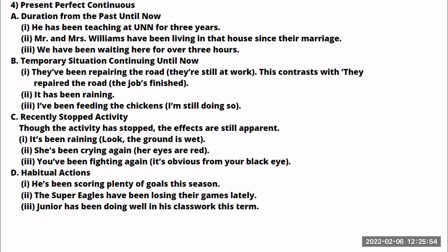The second use of the present perfect continuous is to talk about a temporary situation continuing until now. For example: 'They've been repairing the roads' — it means they are still at work. This is different from 'they repaired the road' or 'they have repaired the road,' which means the action has been done and dusted — completed in the past. But 'they have been repairing the road' means they are still at work. Another example: 'It has been raining' — it hasn't stopped; up until this moment, it is still raining.